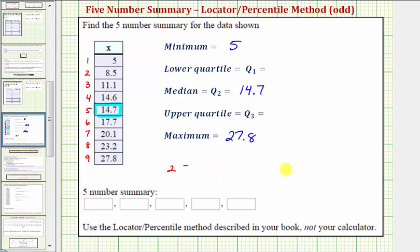Now let's find Q1 and Q3, again using the locator percentile method. We'll use a formula to determine the position of Q1 and Q3.